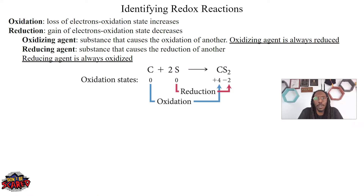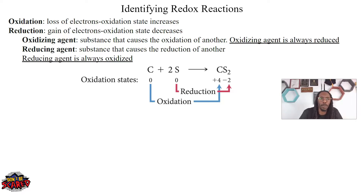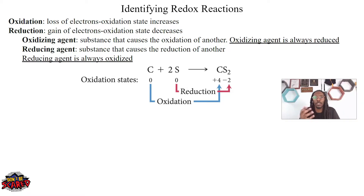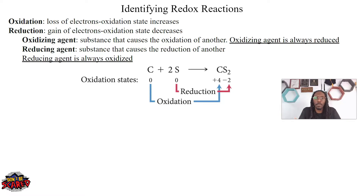Redox reactions, to remind everybody, is oxidation and reduction reactions — redox is just short for that. With a redox reaction, you have to have oxidation and reduction occurring at the same time. Oxidation is the loss of electrons. Reduction is the gain of electrons.